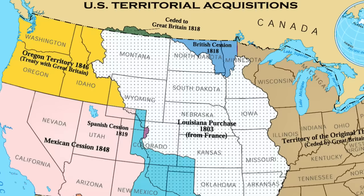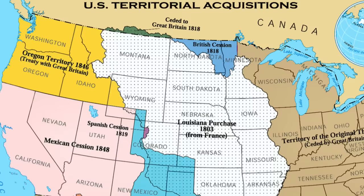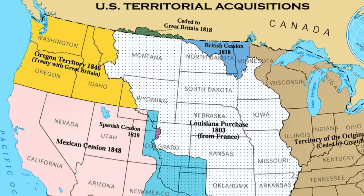The land west of the Rocky Mountains — what would become modern Idaho, Washington, Oregon, and British Columbia — was jointly administered until it too was split along the 49th parallel by treaty in 1846.